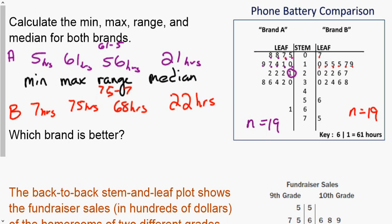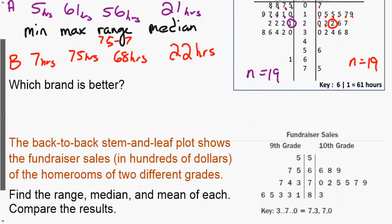Brand B: 7, 75, 68, 22. Again counting the tenth term so you go 1, 2, 3, 4, 5, 6, 7, 8, 9, 10 because it's 9.5, so nine terms on each side, 0.5 means it's actually going to be a data point. Now the question is which brand is better, so we've got all these numbers. Looking at it, brand B is better, the min is better, the max is better and the median is better, so we're going to say brand B.